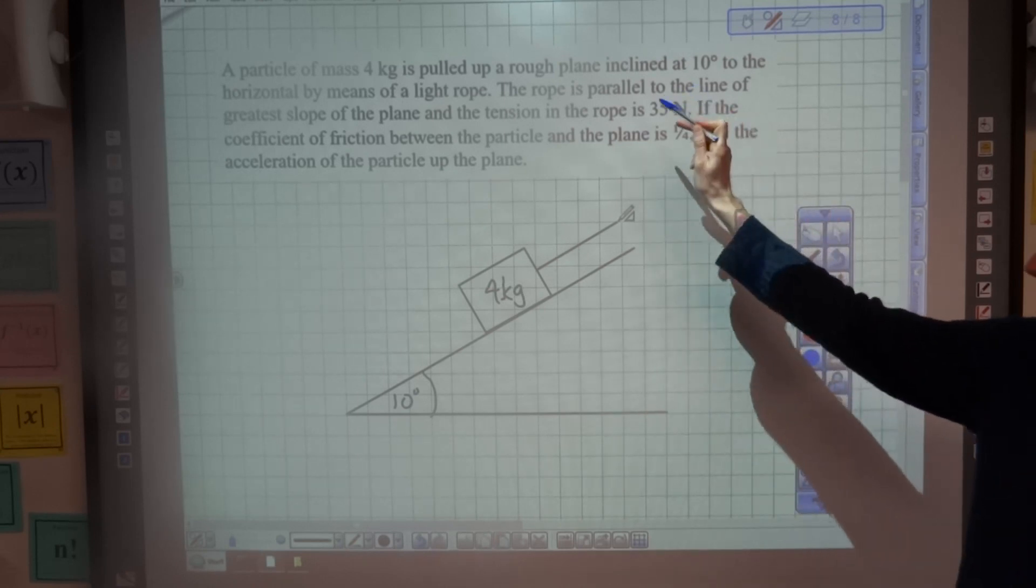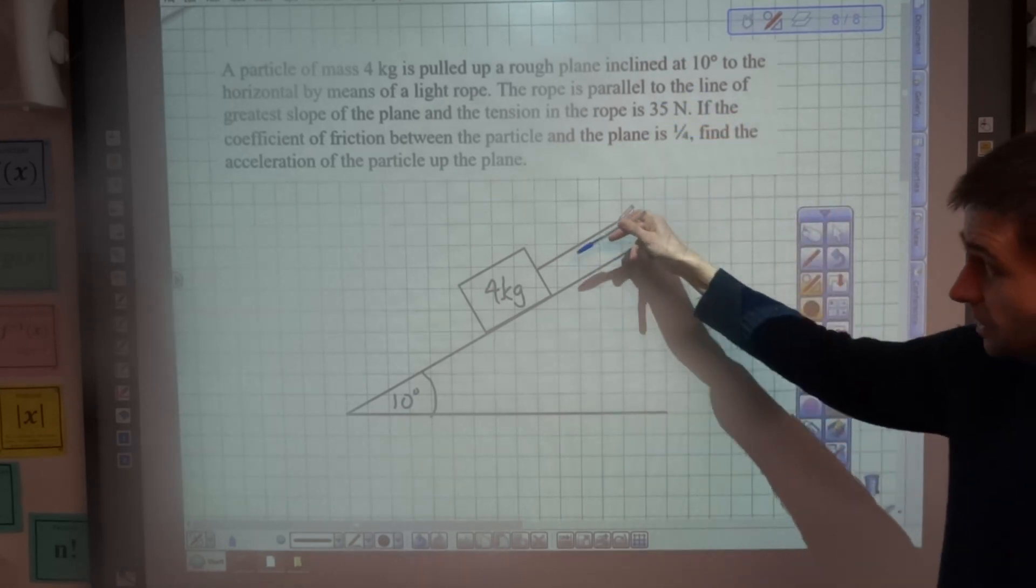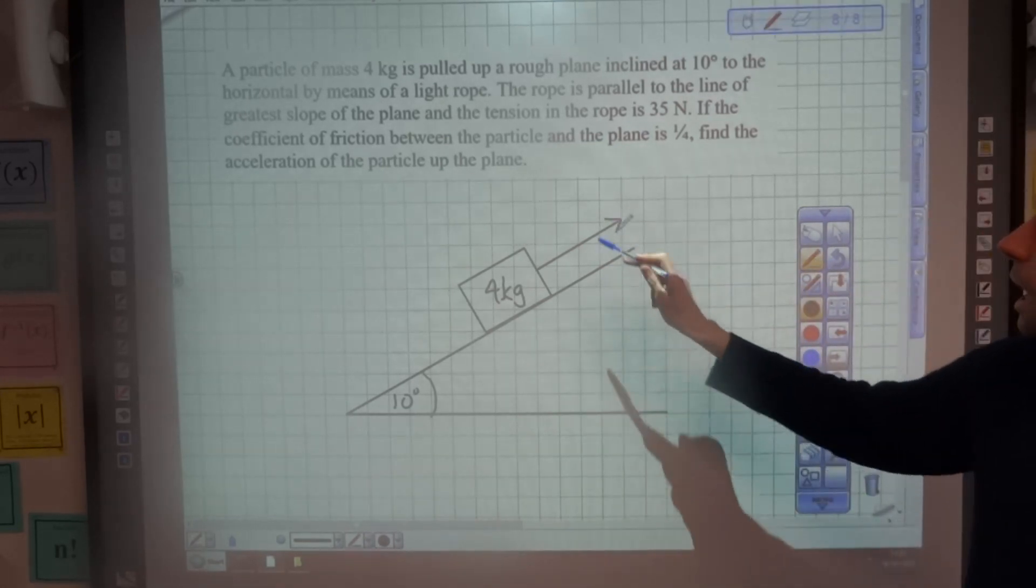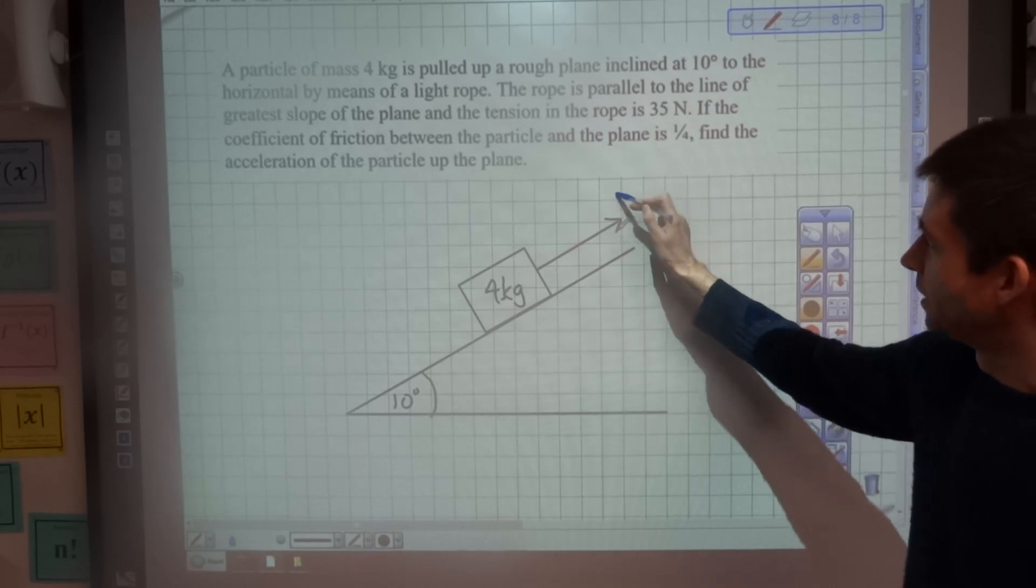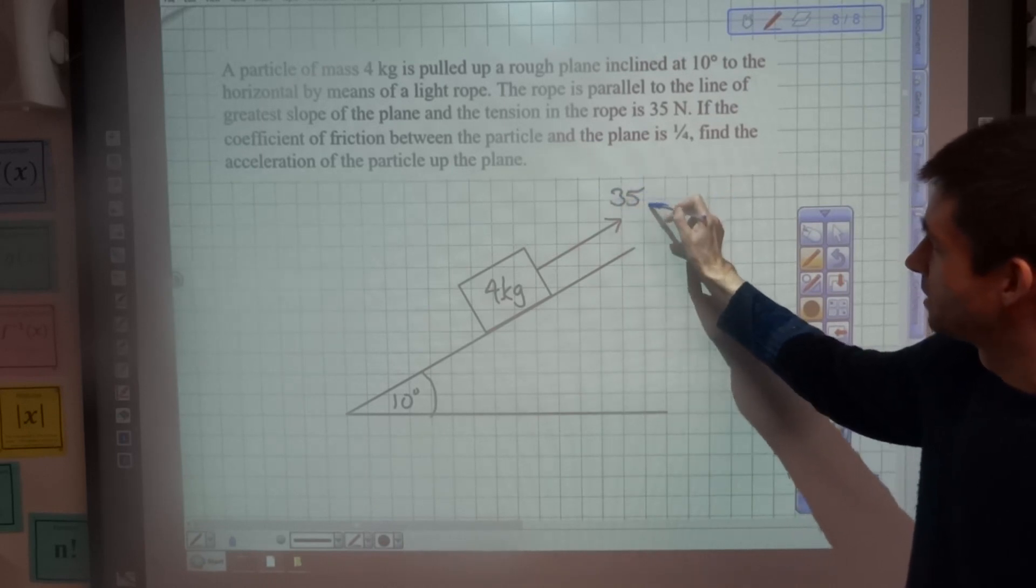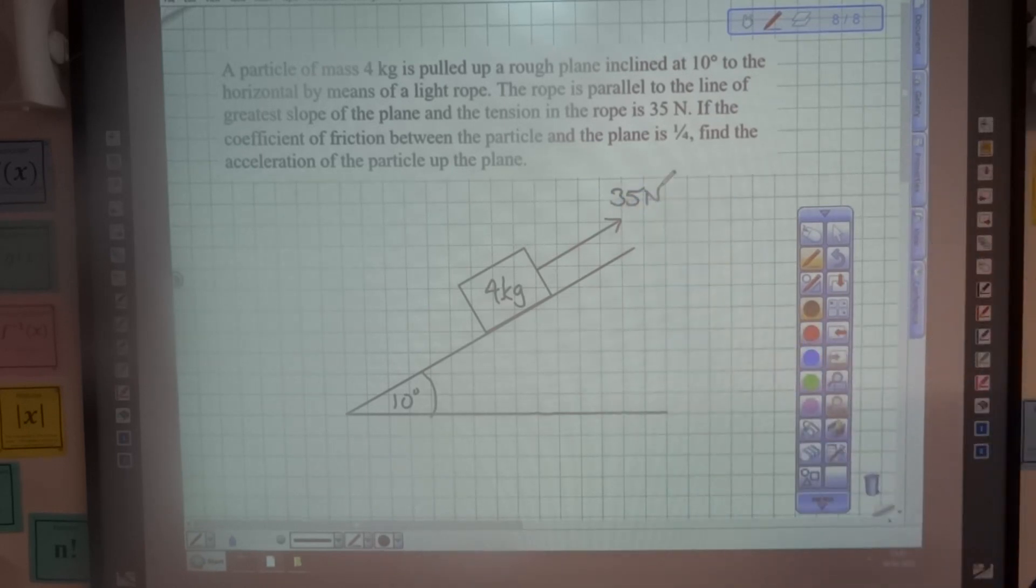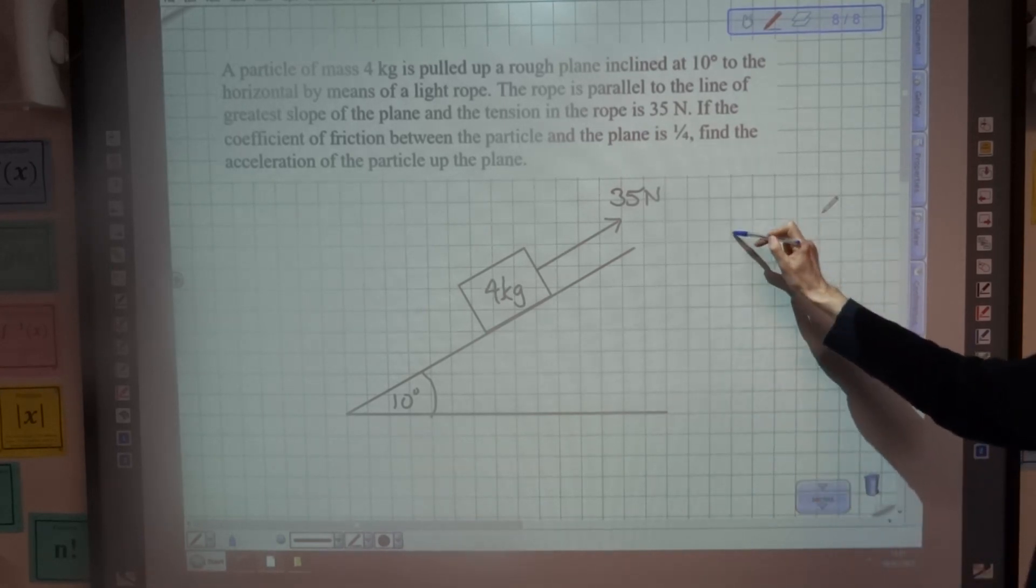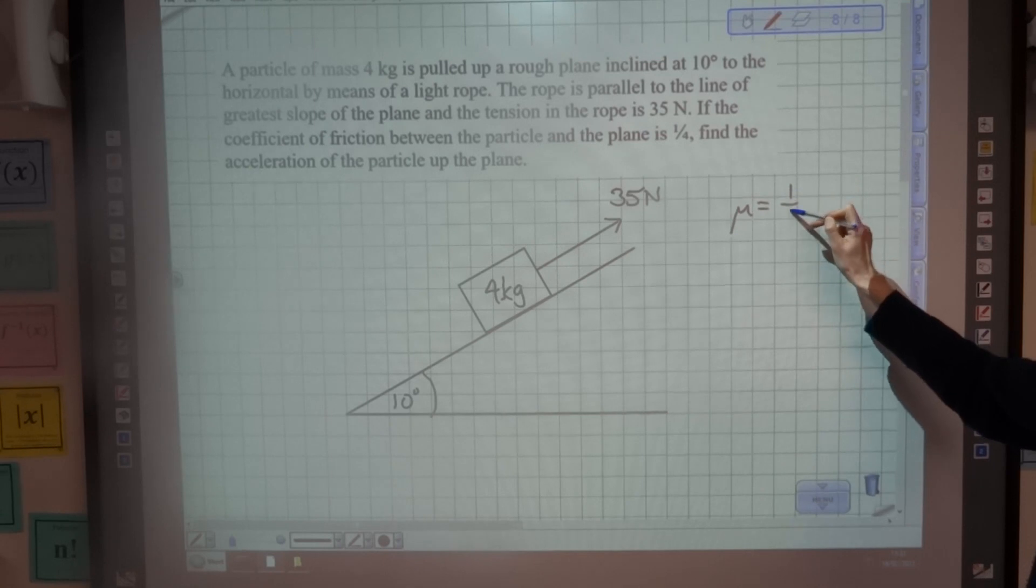The rope is parallel to the line of greatest slope of the plane, so it's parallel to the plane, which is a result because it means no resolving. And the tension in the rope is 35 Newtons, so I'm going to label that 35 Newton force on here. And the final thing I'm told is that the coefficient of friction is one quarter, so let's put that there.